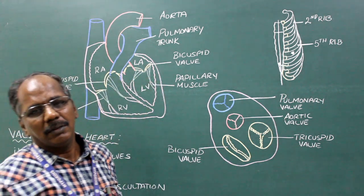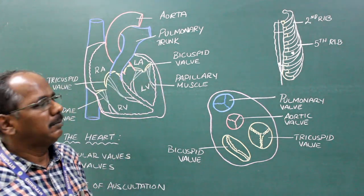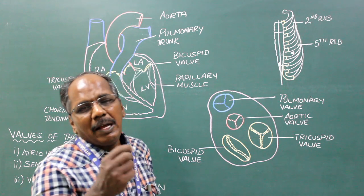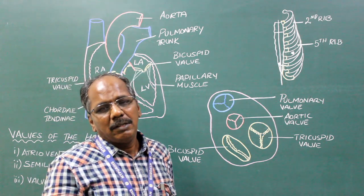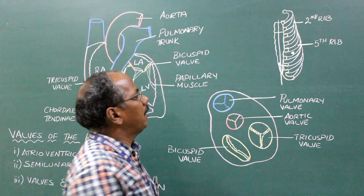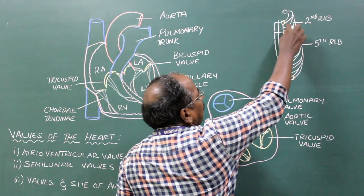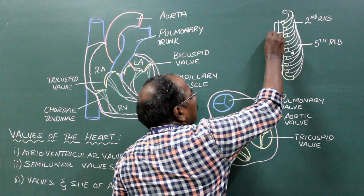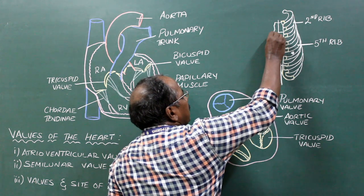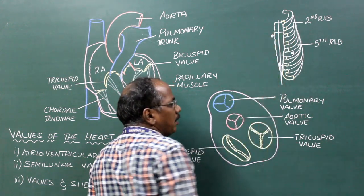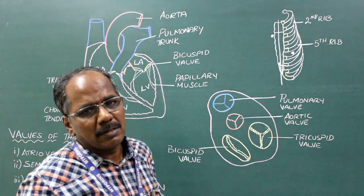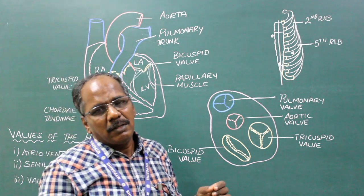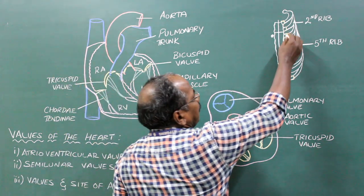Bicuspid valve site of auscultation: left fifth intercostal space, nine centimeters from the midline. Aortic valve site of auscultation: right second intercostal space near the sternum. Pulmonary valve site of auscultation: left second intercostal space near the sternum.